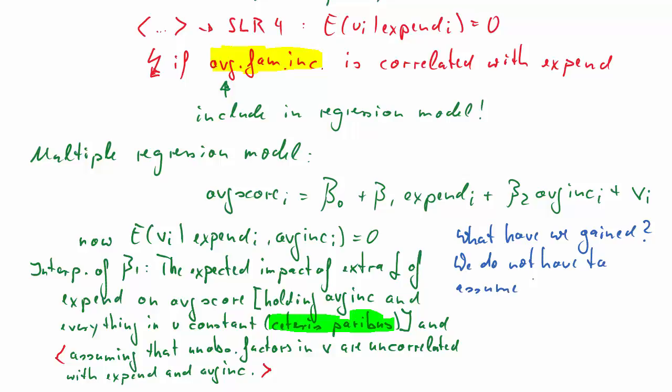For the multiple regression model, we do not have to make this assumption of expenditure and average income being uncorrelated anymore. In fact, they can be correlated, and still we can get unbiased estimates for the beta one. That is a quite significant improvement, because that assumption of these two variables being uncorrelated was quite unrealistic in this particular case.